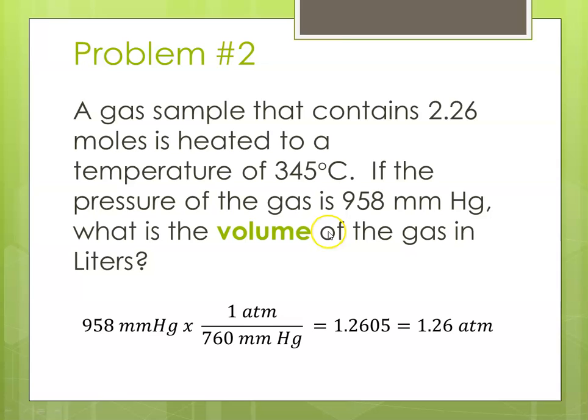So for starters, I'm going to take my 958 millimeters of mercury, and I'm going to convert it to ATMs. So 958 millimeters times 1 ATM is 760 millimeters. Millimeters goes away, that comes to 1.206, which would round to 1.2605, which would round to 1.26 ATMs.